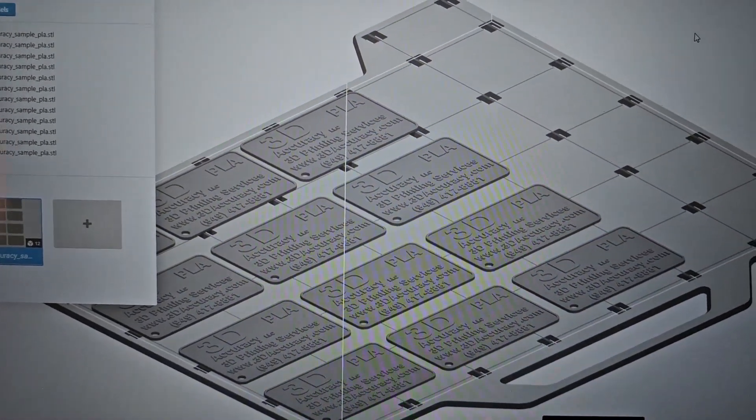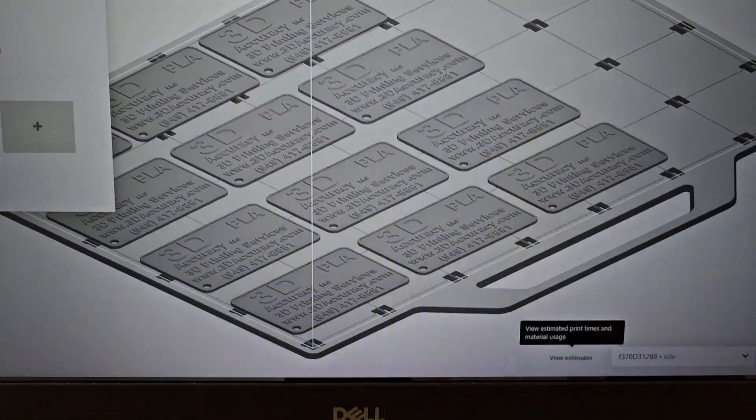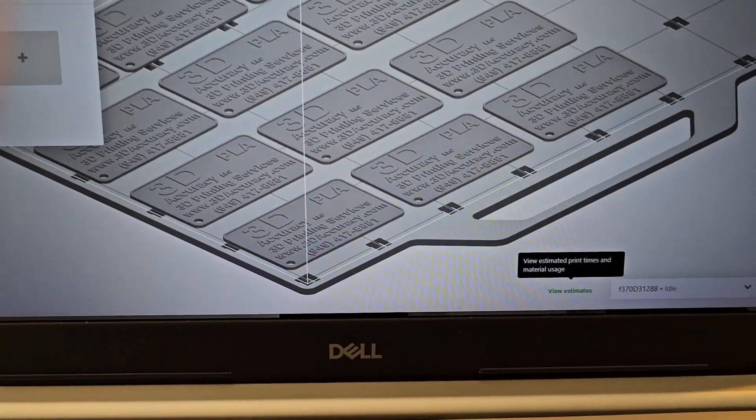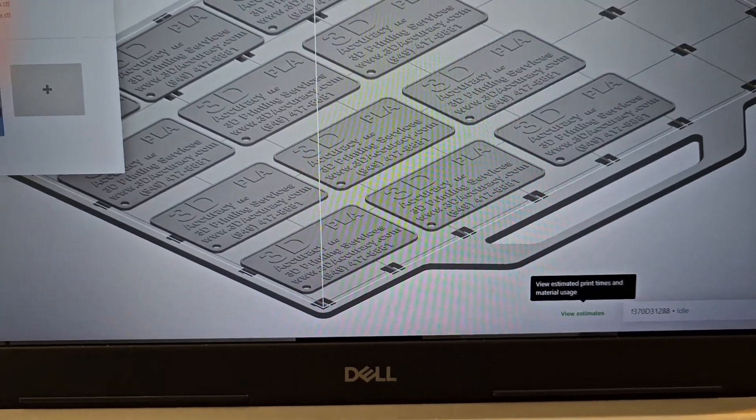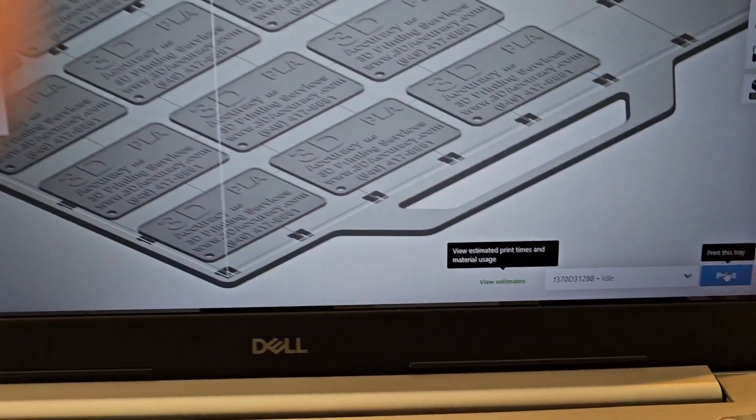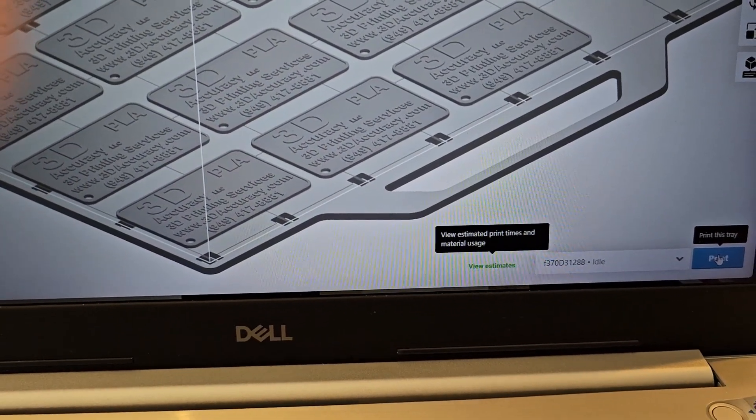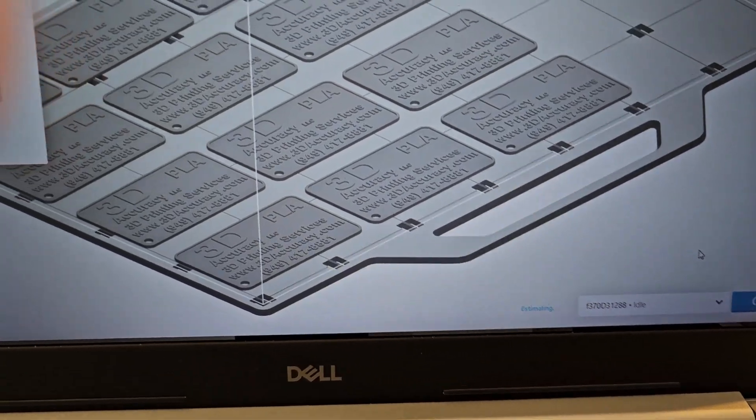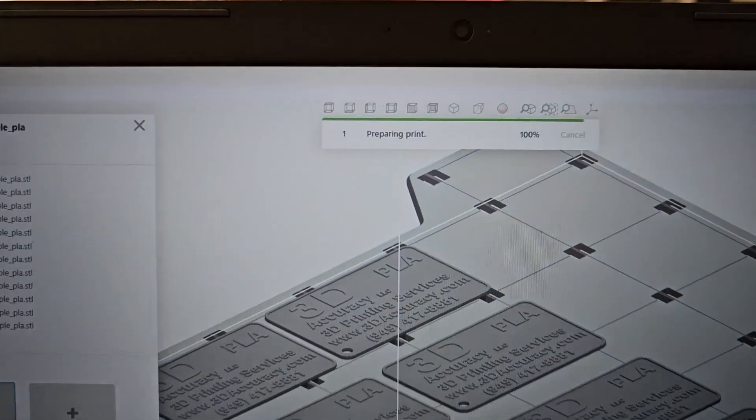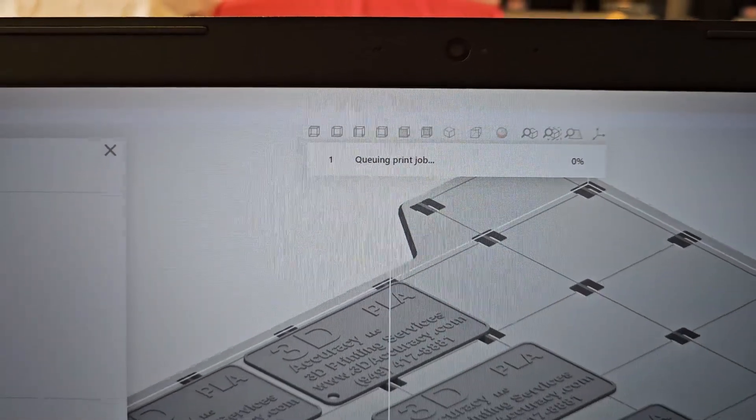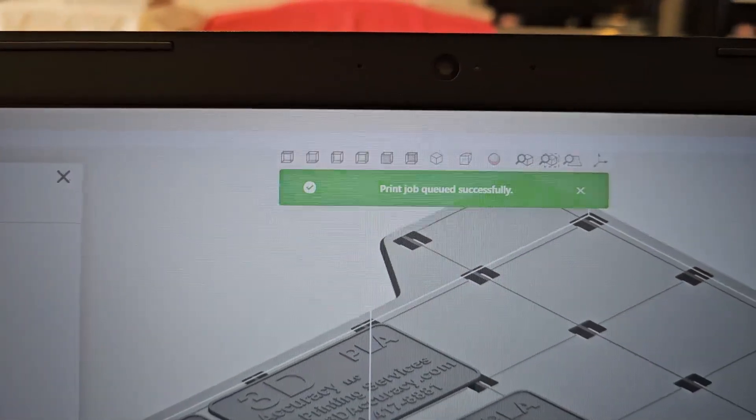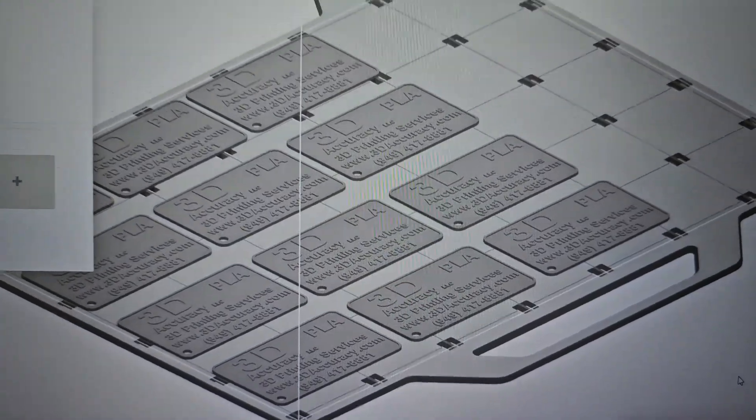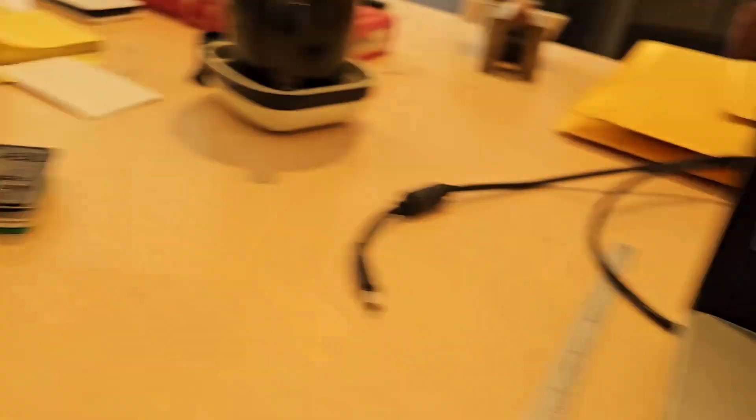Everything is all set up. It's all tweaked in and ready to go. All I have to do is come over here and let's just hit print down here in the corner. It's preparing to print. Print job queued successfully. Now let's go see if I can see it over on the printer.